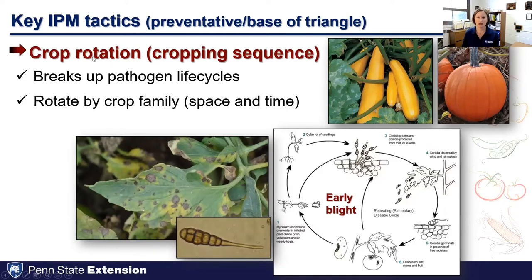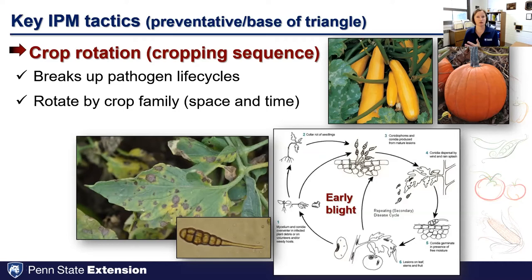Moving along in preventative tactics: crop rotation — and I think about crop rotation also in terms of cropping sequence. If you have cover crops between your cash crops, you need to think about what plant family that cover crop is. If you're growing snap beans and then have a legume cover crop, from a pathogen standpoint that's not crop rotation, because pathogens that go to snap beans will also go to any leguminous cover crop. With crop rotation we're trying to break up those pathogen life cycles by rotating by crop family.